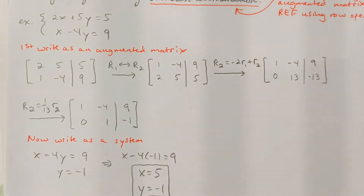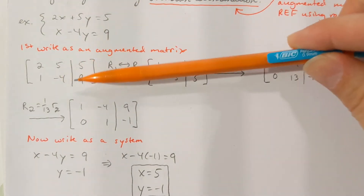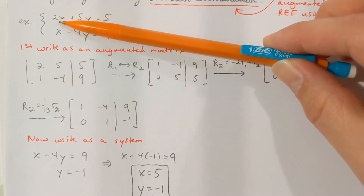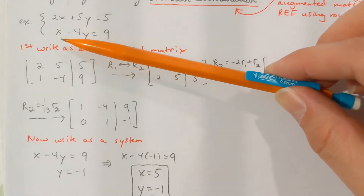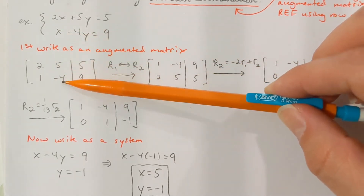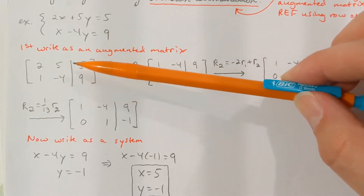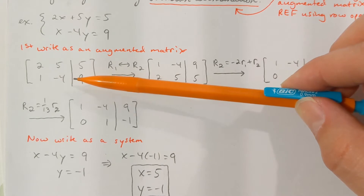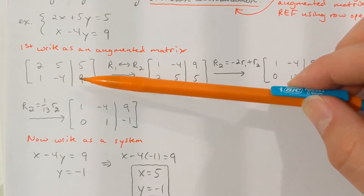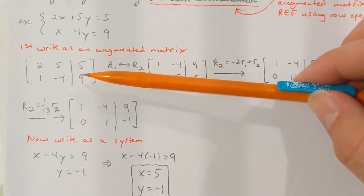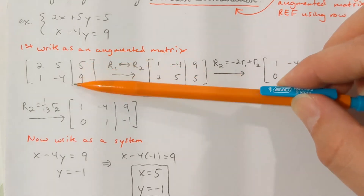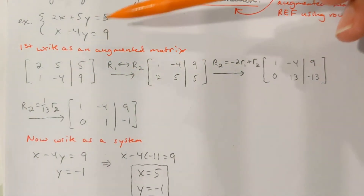Here's one example — I want to solve this system. If I'm using matrices, the first thing I need is an augmented matrix. I've got two equations, therefore I'm going to have two rows. In the first equation, I've got a 2 in front of x, a 5 in front of y, and a 5 in the coefficient column. In the second equation, I've got a 1 in front of x, a negative 4 in front of y, and a 9 in the coefficient column. Make sure that you have the vertical bar drawn — that's part of the notation for an augmented matrix. Without it, we'd have the coefficient matrix, which doesn't have a direct connection to systems. The bar represents the equal signs.